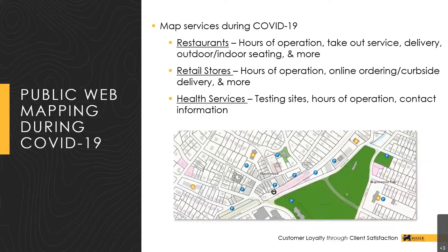During the COVID-19 pandemic, we've seen the need to share even more information with the public as things within towns continue to change daily. Citizens can use web maps to look up what restaurants are currently open, whether they offer takeout or delivery services, what retail stores have curbside pickup, and where the closest COVID-19 testing site and health services are. This type of information helps promote local businesses and inform citizens through a focused application customized to a town's specific needs.